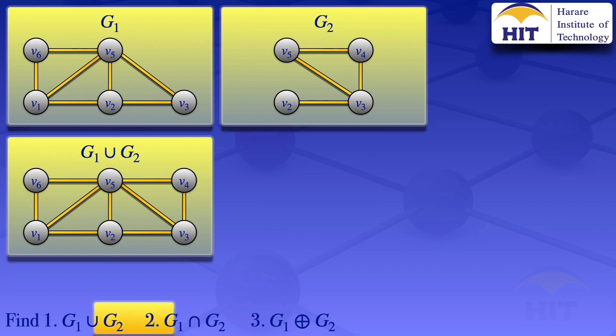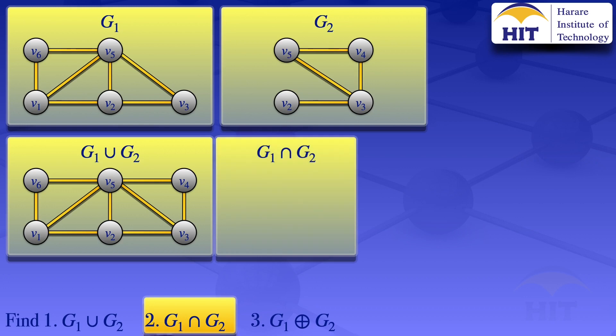I now move on to the second question — the intersection of G1 and G2. For the intersection, we are looking at edges and vertices that are in both G1 and G2. We look at the vertices that are in both G1 and G2, and we see that we have V2 — it is in G1 and G2 — and V3 — it is in G1 and G2 — and V5 — it is in G1 and G2.